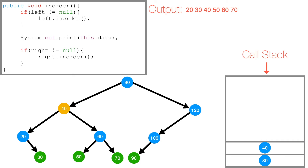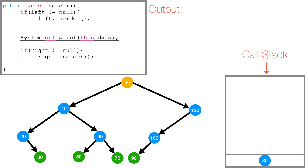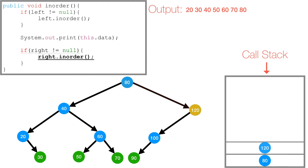We've explored 60's left and right subtrees, so 60 is popped off the call stack and we're back at 40. We've explored 40's left subtree containing 20 and 30, and 40's right subtree containing 50, 60, and 70, so 40 gets popped off as well. Now we're back at 80. We've explored the entirety of 80's left subtree, so we continue and print 80. Then we check if 80's right is not null — it's not — so we call in-order on 80's right subtree.